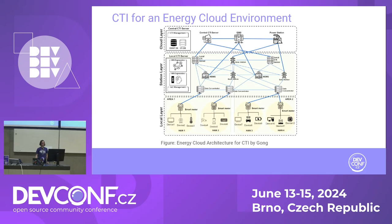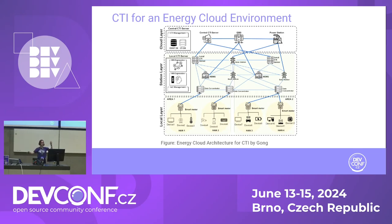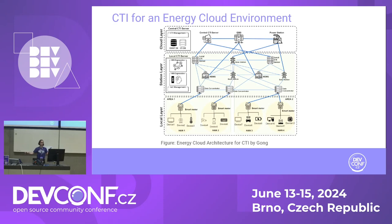Here is an example of how a CTI environment can be built. We have multiple data centers with edge computing devices, sensors, and smart meters that send data to the station-level layer with a local CTI server. The local CTI server compares information and identifies potential attacks. When an attack is detected, the central CTI server in the cloud layer is informed, professionals are alerted, and data is sent to other local CTI servers to protect the whole environment.